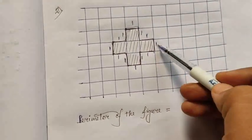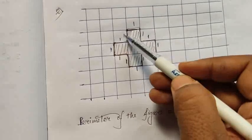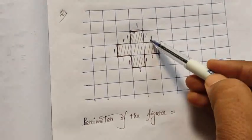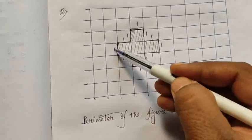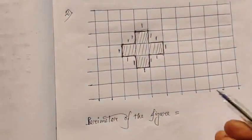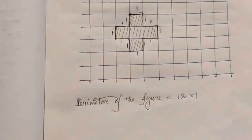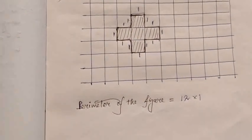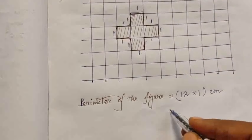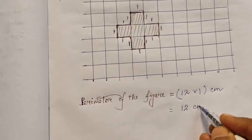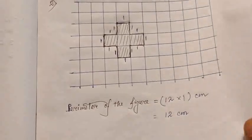Counting the boundary sides: one plus one plus one... there are twelve sides each of one centimeter. So we can write twelve into one centimeter, which equals twelve centimeter. The perimeter of the figure is twelve centimeter.